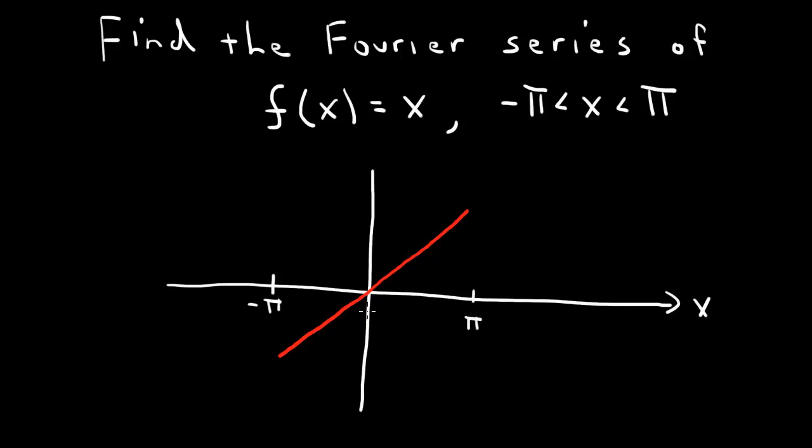So the Fourier series of this function then is a periodic extension of this function. So outside of the minus pi and pi interval, it will repeat itself. So it would look like here and here. So this is the periodic extension of this function. And the Fourier series then will represent this periodic extension. But all we're interested in is the function then between minus pi and pi.